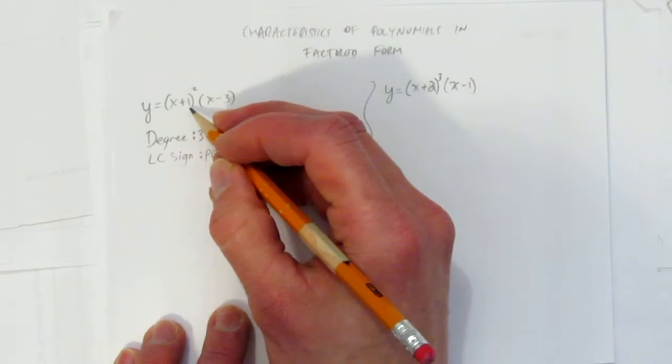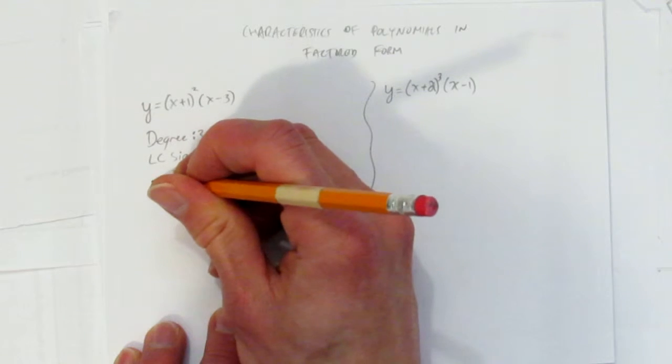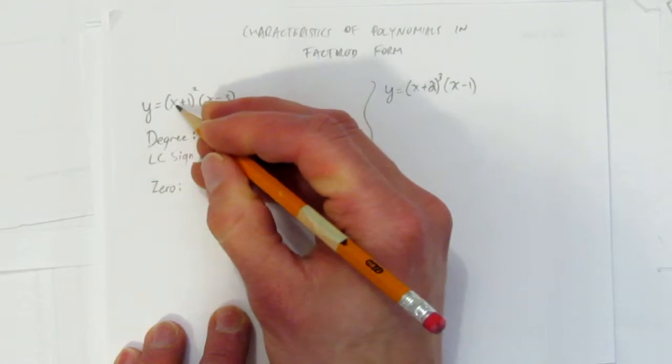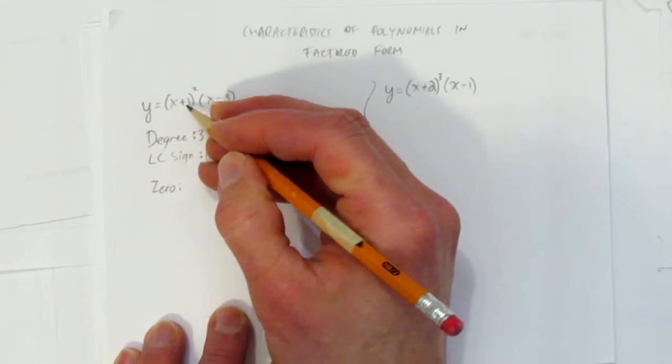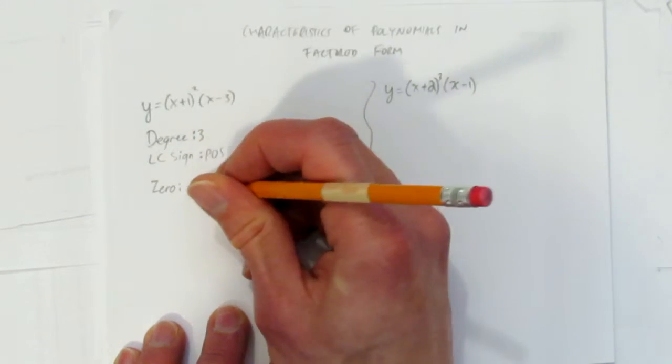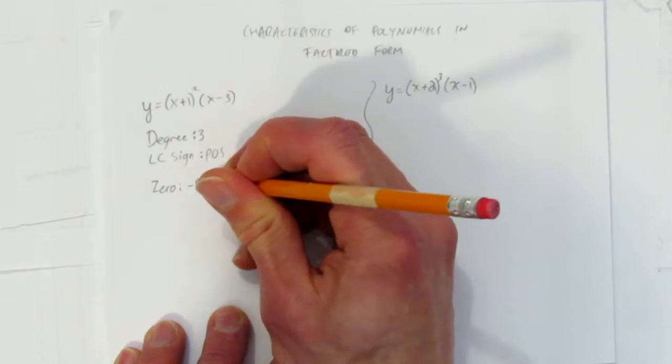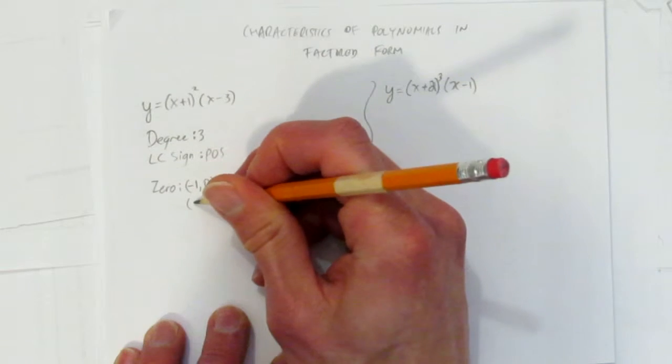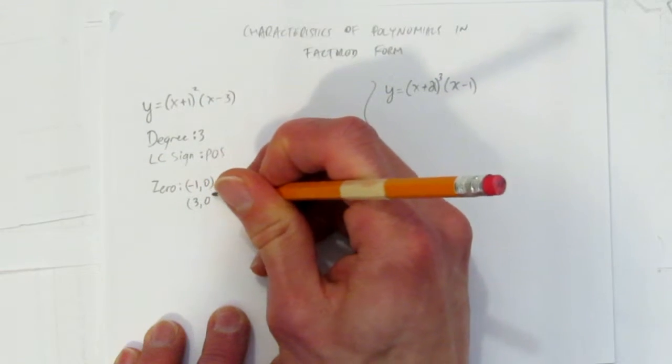But we have to say a couple more things. We can tell from the brackets here where its zeros are. One of its zeros is going to be at negative 1. That's what would make this bracket 0. That's the definition of a 0. If you sub a negative 1 in here, you get a 0. So one of the zeros is negative 1, 0. What makes this bracket 0? A 3. So those are your two zeros.